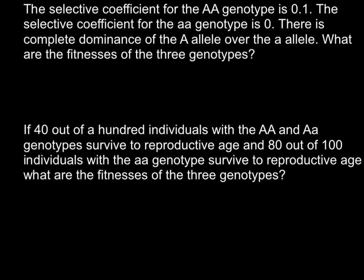We use W to designate fitness. So this is going to be W for the homozygous recessive genotype, because it shows the best results in fitness, and its selective coefficient is 0. What does it mean? That 100% of this genotype would survive until reproductive age.